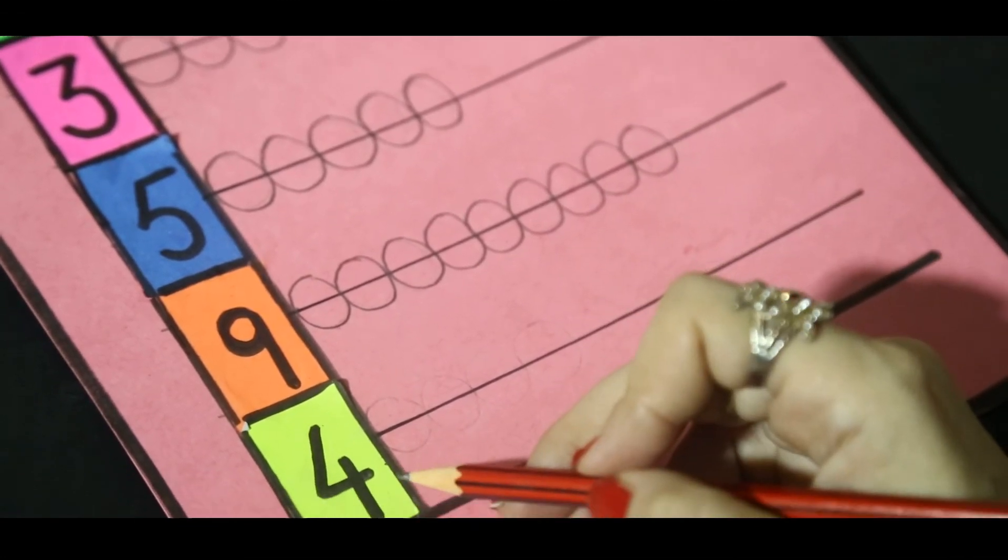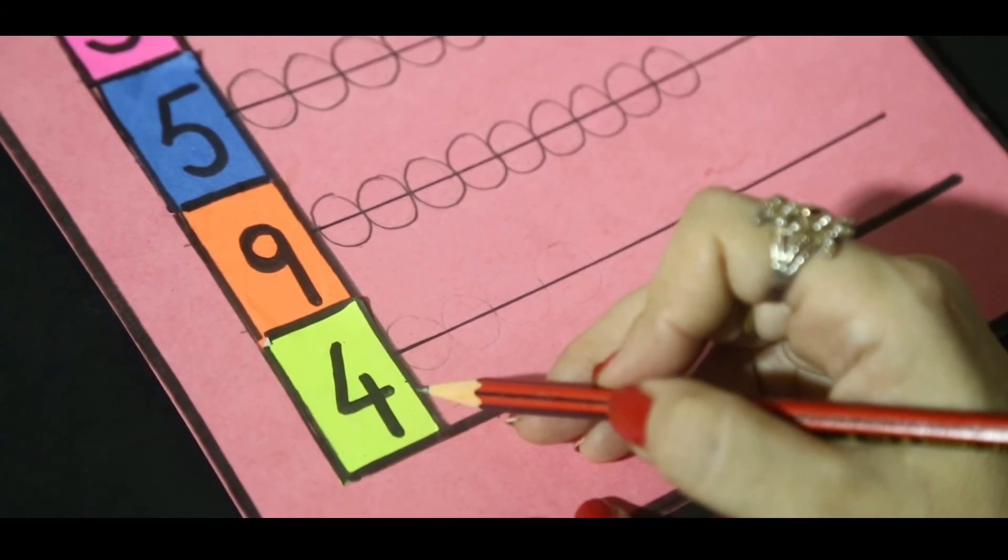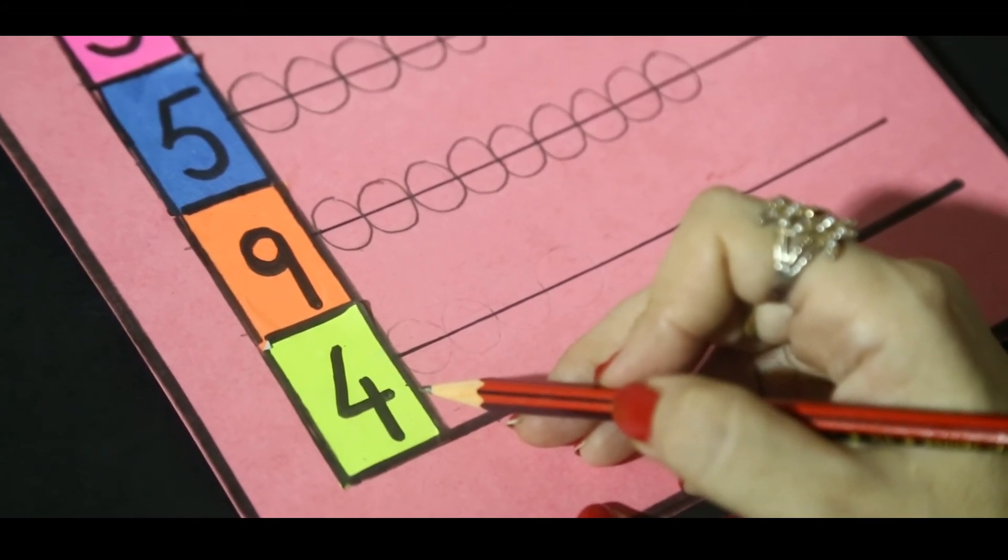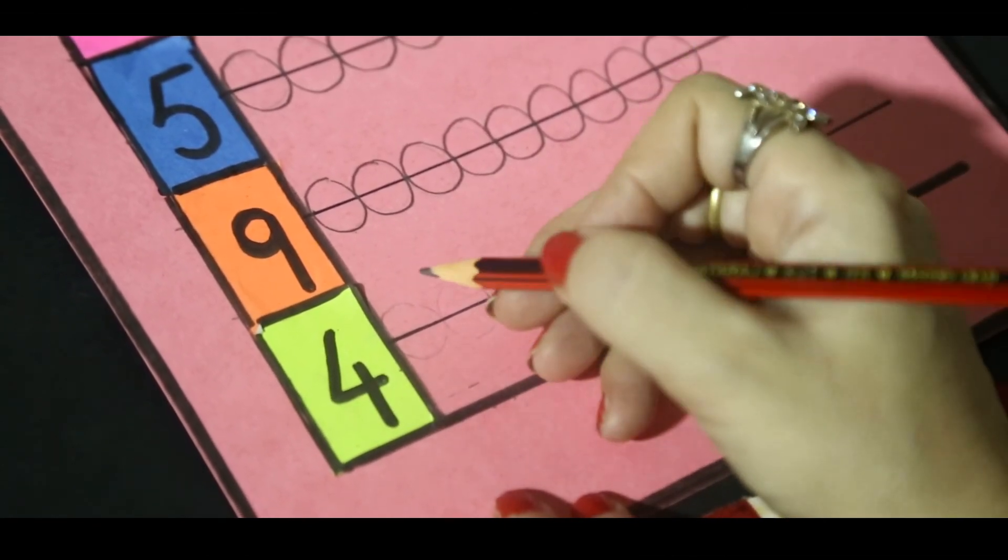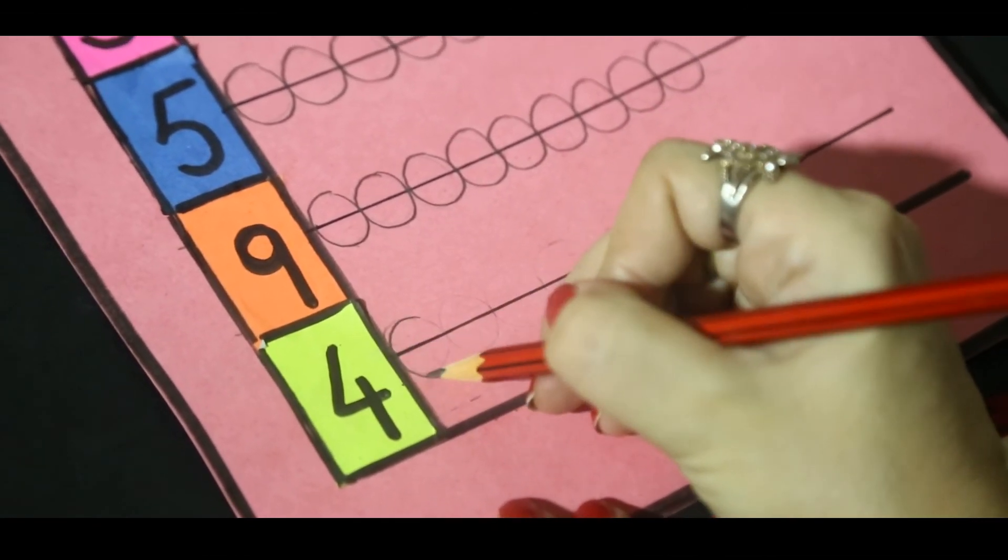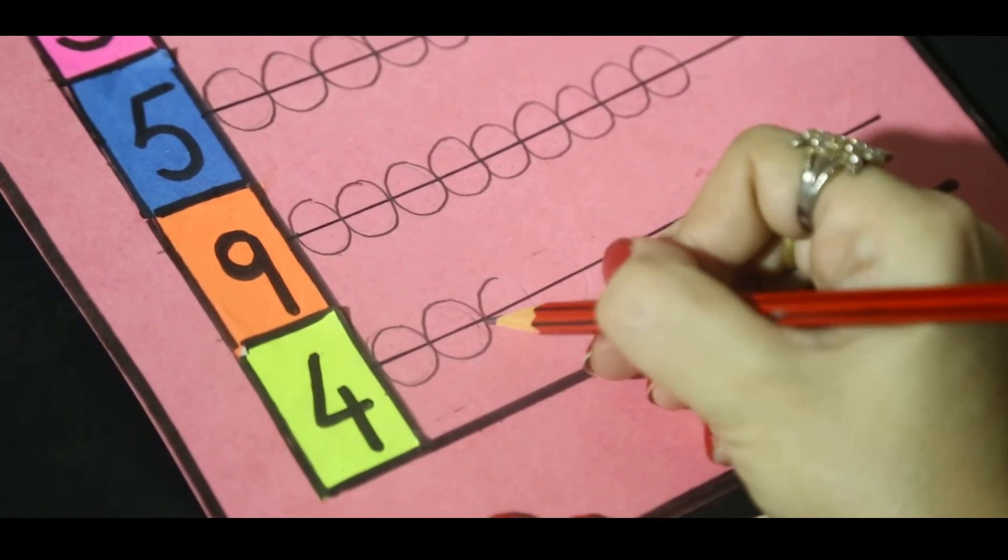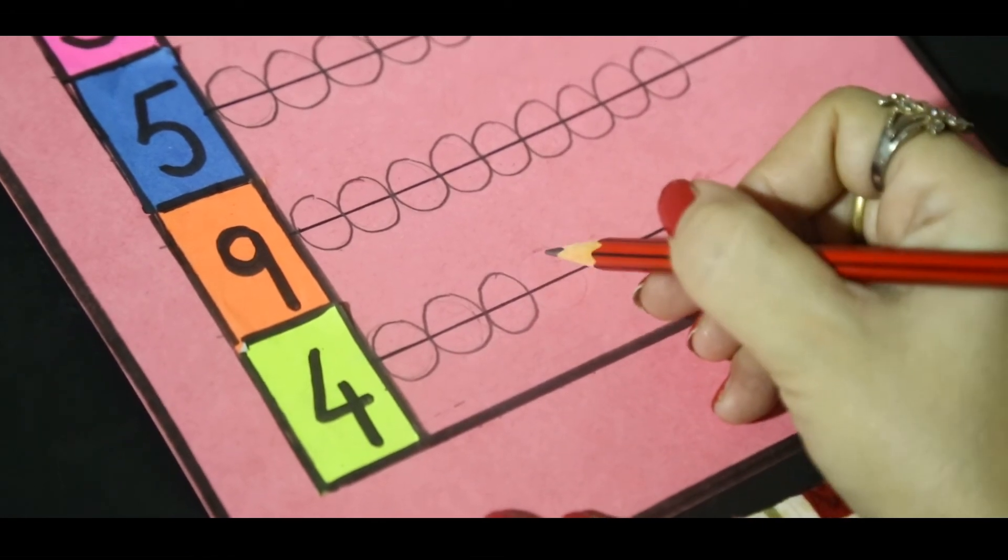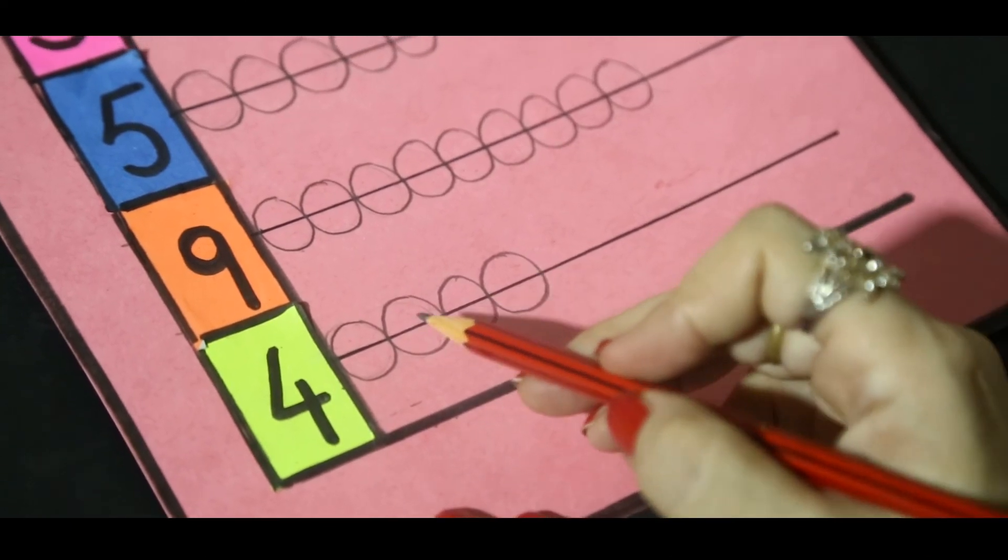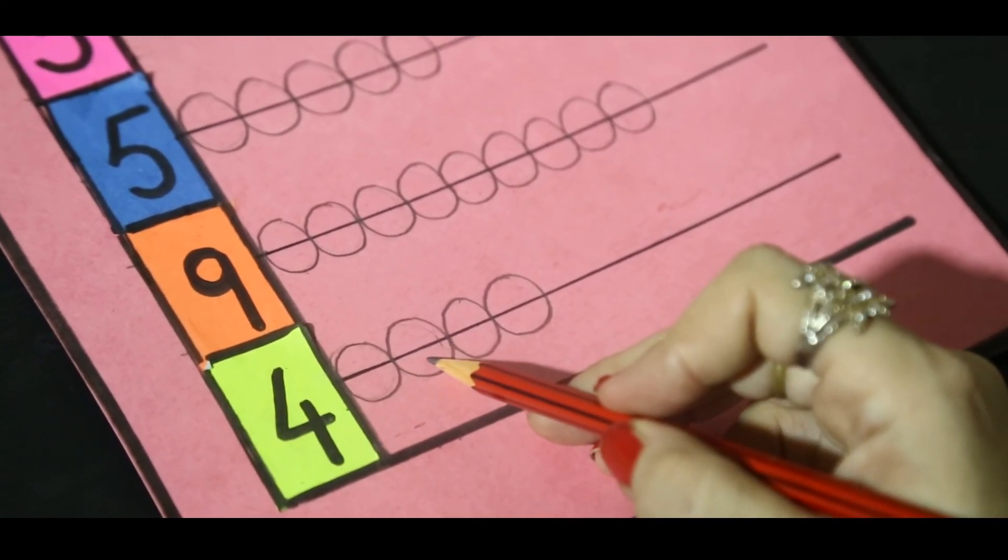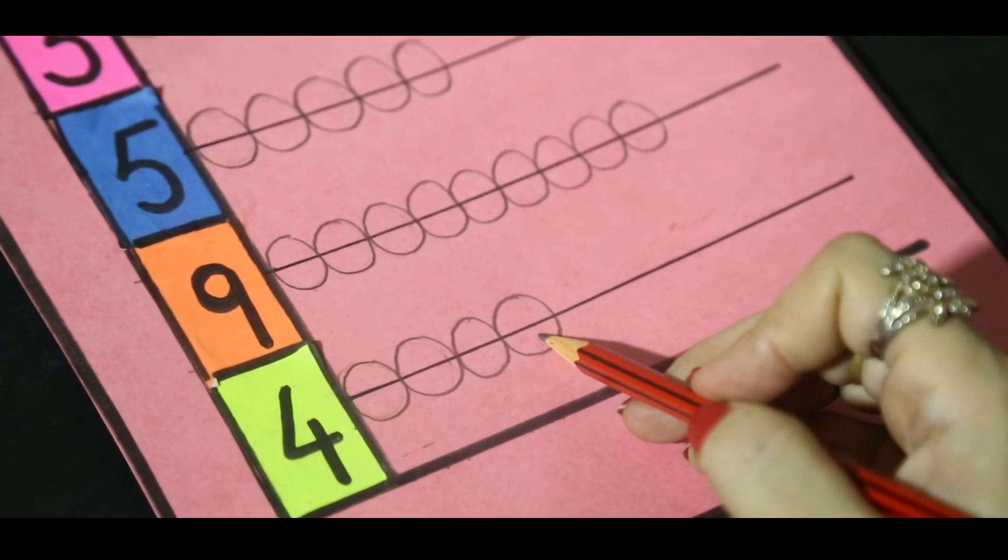Our last number is 4. So, how many beads I will draw? Tell me fast. Yes, very good. I will draw 4 beads. 1, 2, 3, and 4. Now, I will count the beads. 1, 2, 3, 4. Excellent.